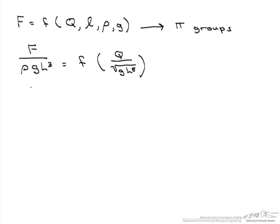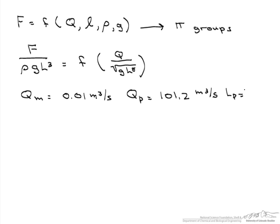Given that our volumetric flow rate on our model is 0.01 meters cubed per second, the flow rate for the prototype is 101.2 meters cubed per second, and the length of the prototype is 1000 meters.